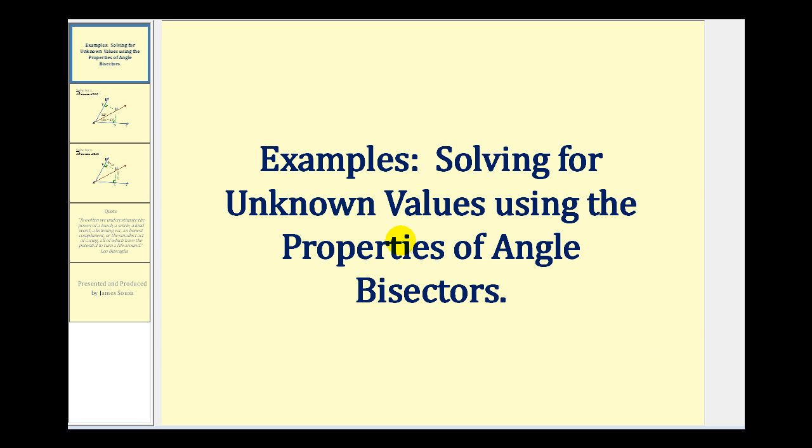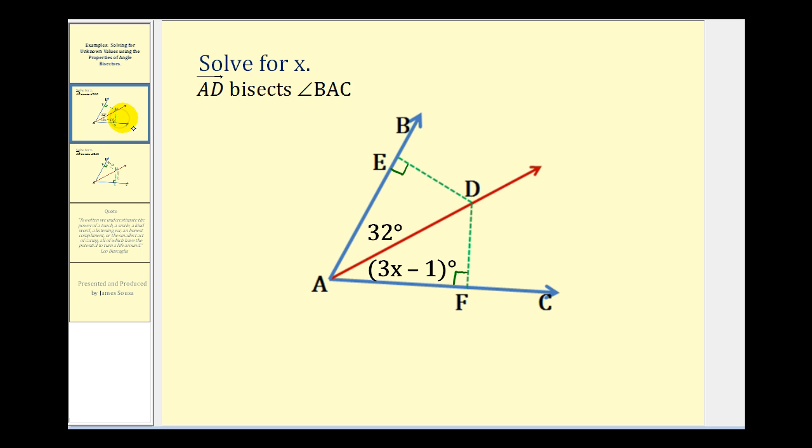Welcome to examples of solving for unknown values using the properties of angle bisectors. Here we're given that ray AD bisects angle BAC. Remember that tells us that angle BAD is congruent to angle DAF.